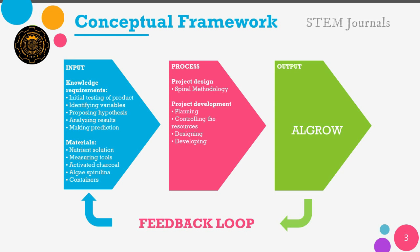For the conceptual framework in the IPO model, it shows the chronological order and how the researchers will come up with the output. Starting with the input, which shows the knowledge requirements as well as the materials needed in order to proceed in making the process, and converting the input into an output in order to create an alternative fertilizer and compare it with other types of organic ones to test its effectiveness.